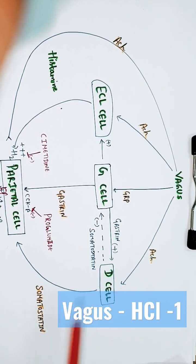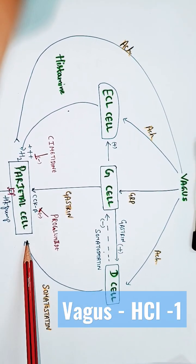vagus nerve also stimulates D cell. But D cell produces somatostatin which is inhibitory to parietal cell.